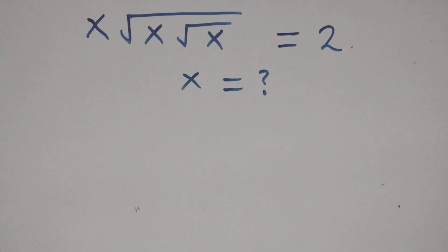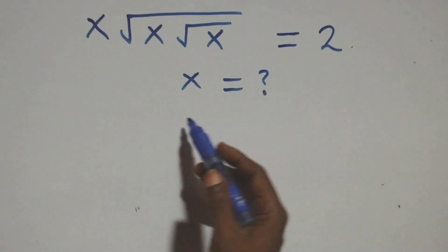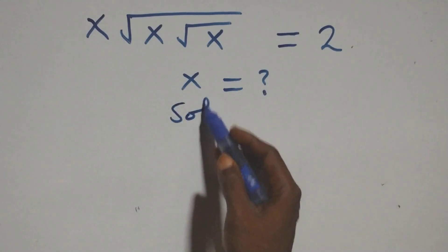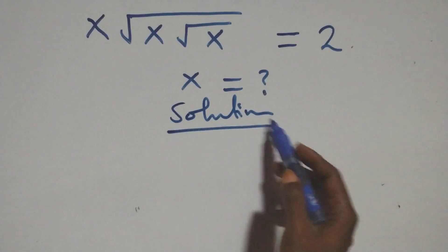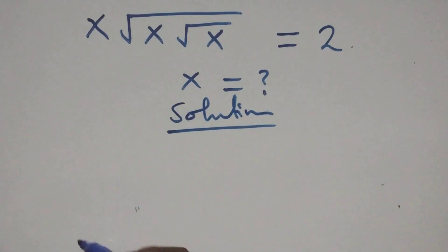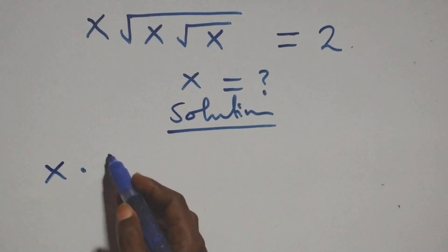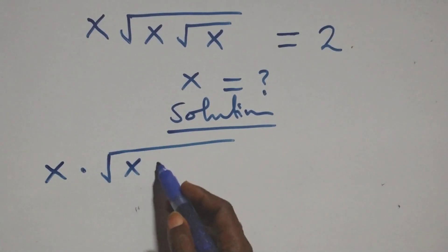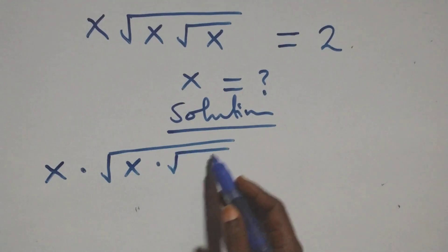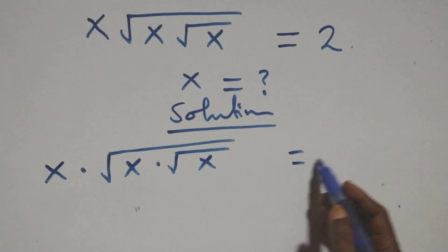Hello, you are welcome. How to solve this nice algebra equation. This is the same thing as x times square root of x times square root of x equals to 2.